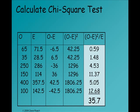Then I take for each one, observed minus expected: 65 minus 71.5 is minus 6.5. Then I square it to get 42.25. Then I divide that by the expected value, in this case 71.5, to get 0.59. I do that for each cell, and then I sum them up to get a chi-square test of 35.7.